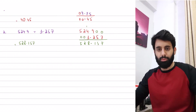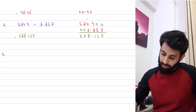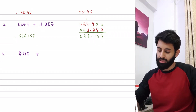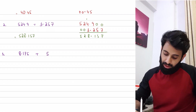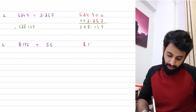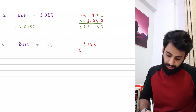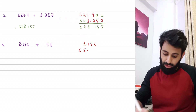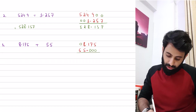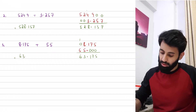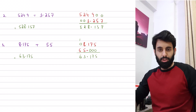One more addition example — this time with an integer. 8.175 plus 55. Remember that 55 means 55.0, so I'll write 55 with a decimal point and fill the remaining places with zeros. Then: 5 plus 0 is 5; 7 plus 0 is 7; 1 plus 0 is 1; decimal as it is; 8 plus 5 is 13, carry 1; 5 plus 1 is 6. The final answer is 63.175.